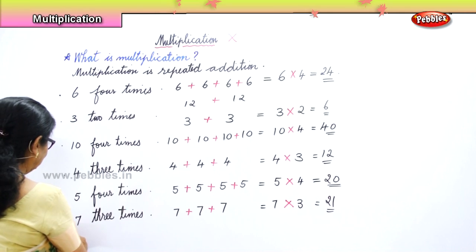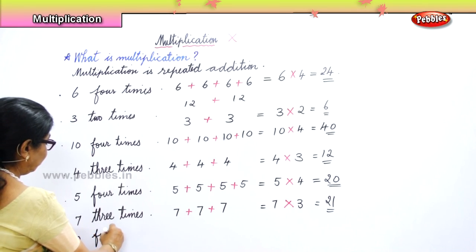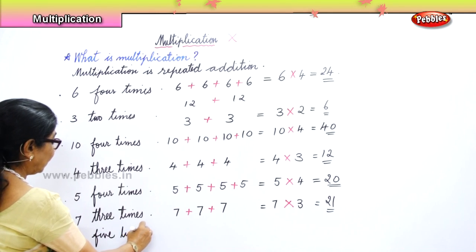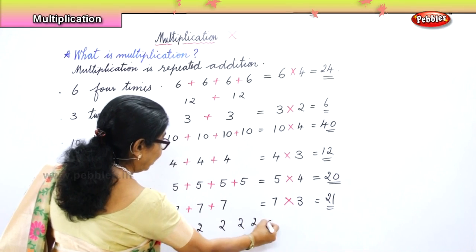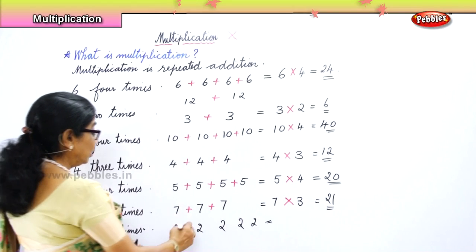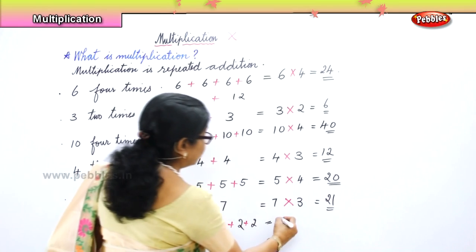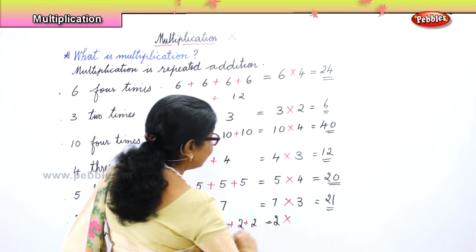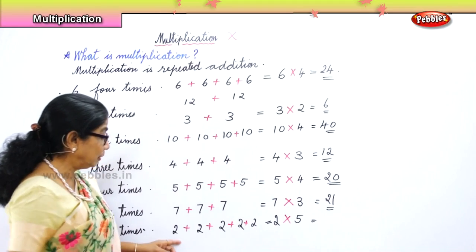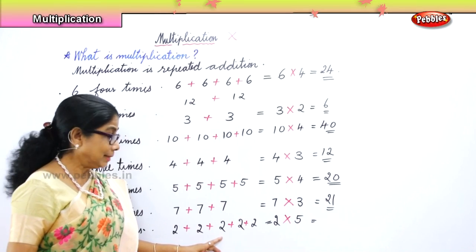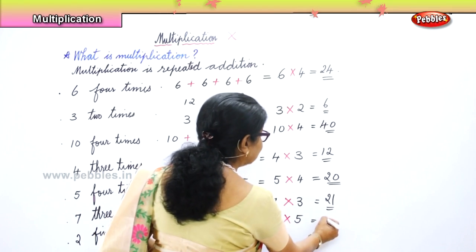Now let's take two, five times. Two, five times — that is two plus two plus two plus two plus two. Two plus two is four, four plus two is six, six plus two is eight, eight plus two is ten. Two fives are ten. Your answer is ten.